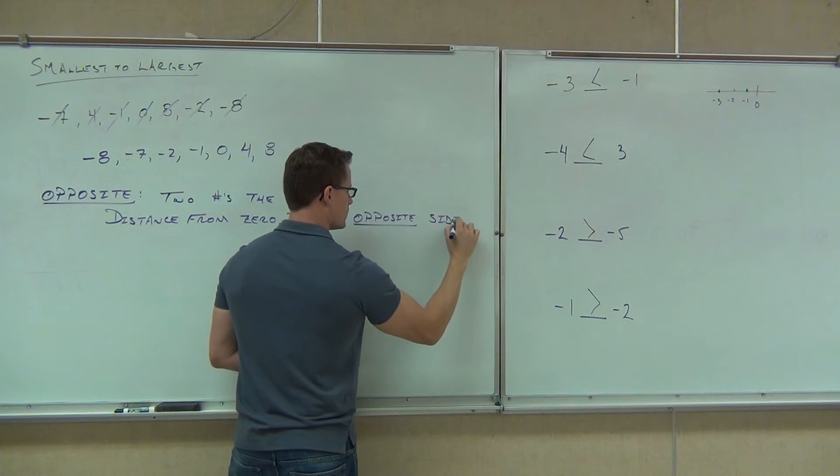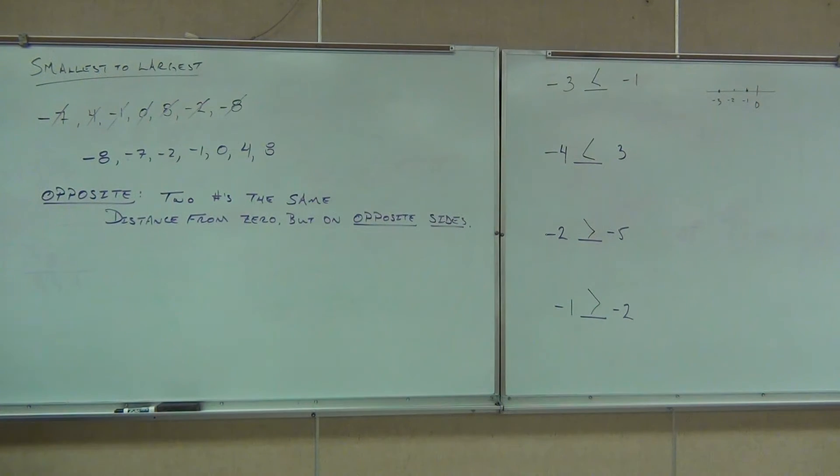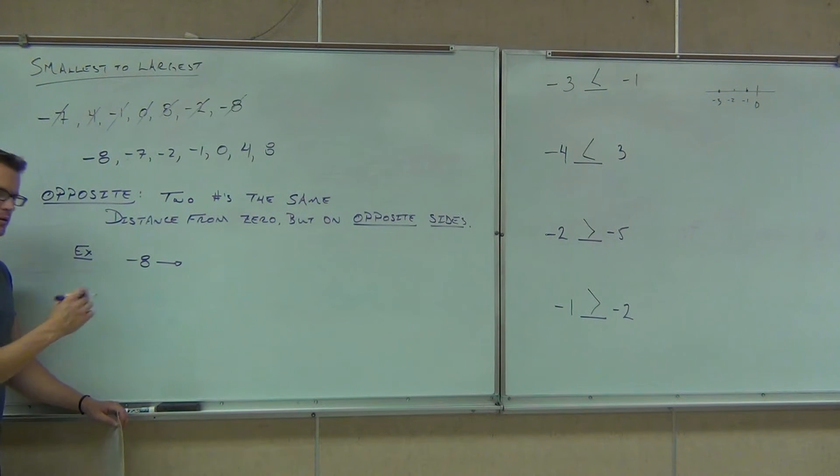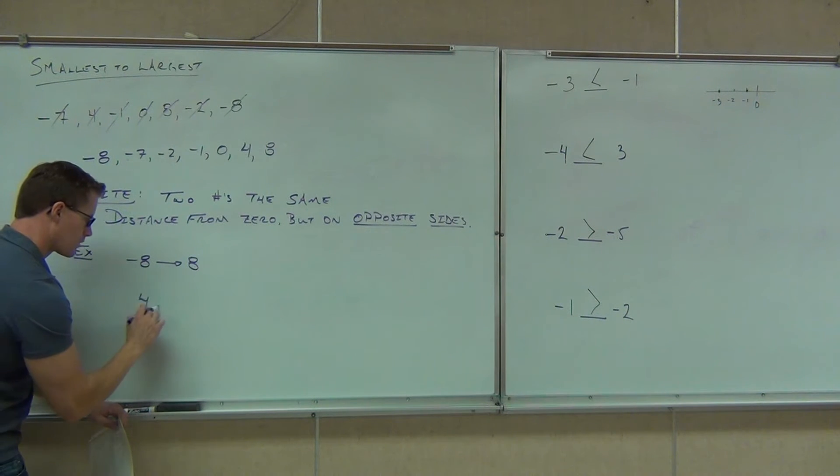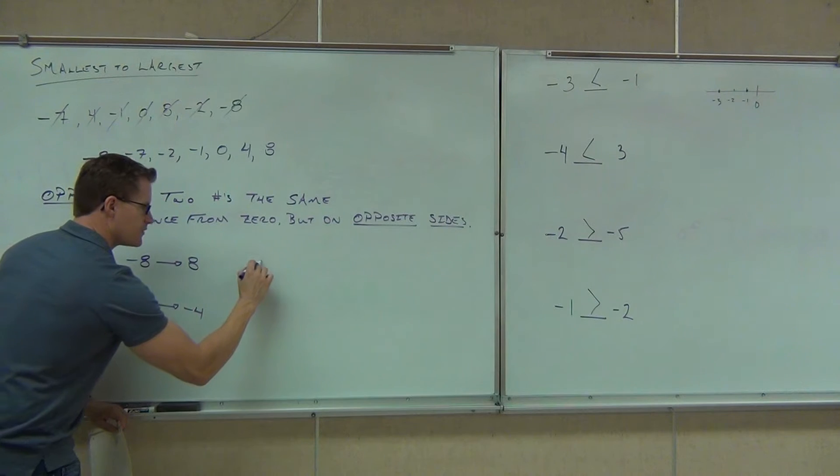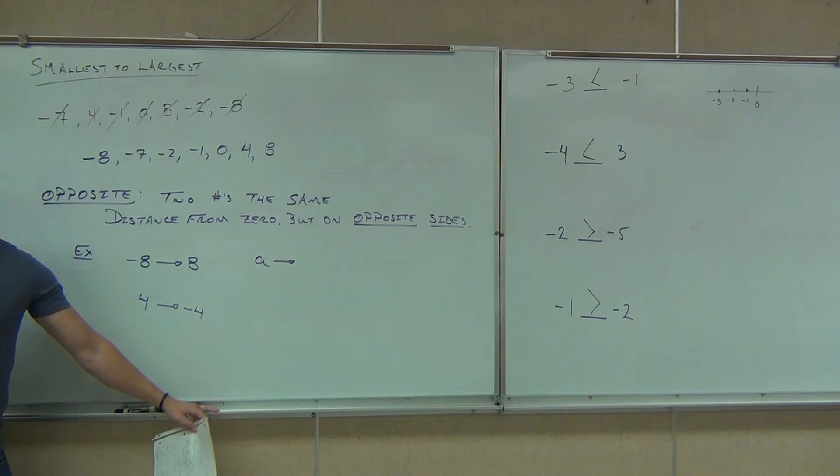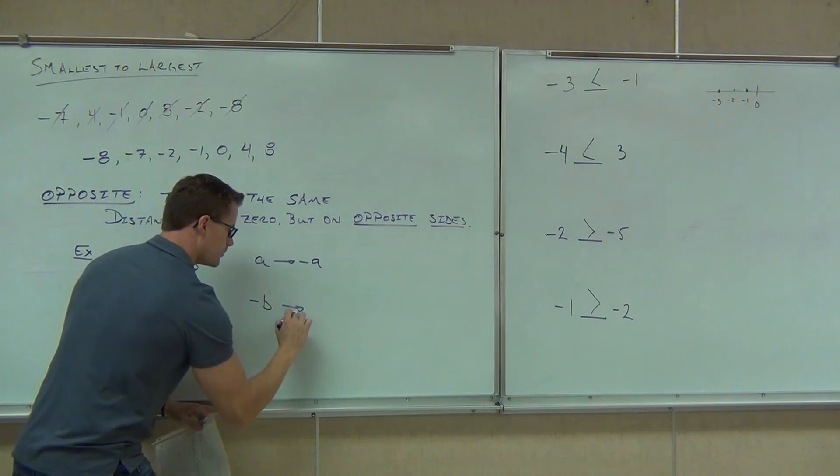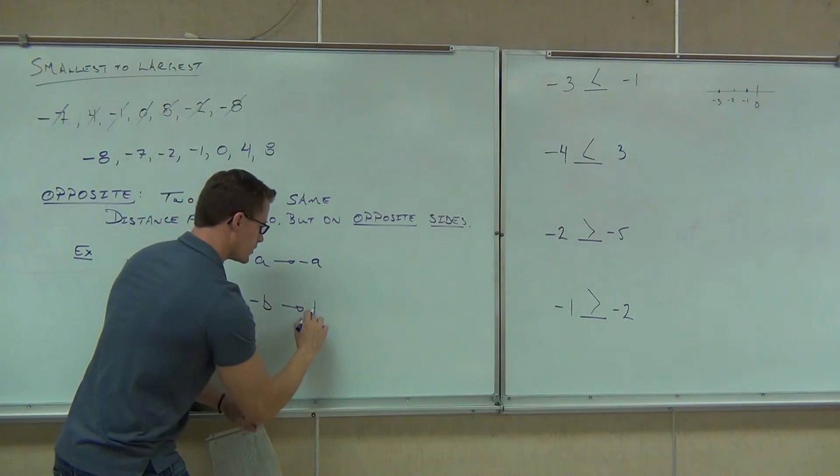So opposite means two numbers the same distance from zero, but on the other side of zero. So, opposite of negative eight, opposite of four, opposite of eight is negative eight. Does it matter whether we have an actual number or variable? No. Opposite of negative B. We can extend this concept to variables as well.